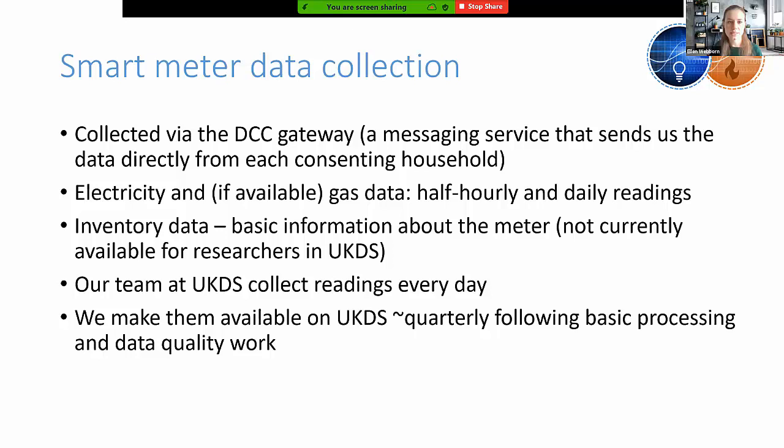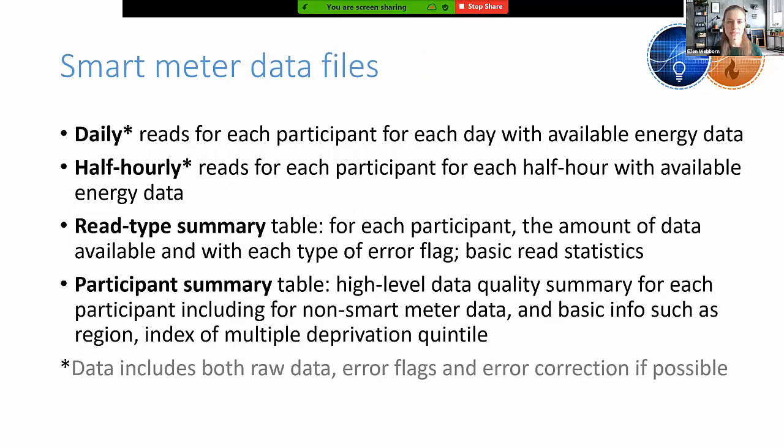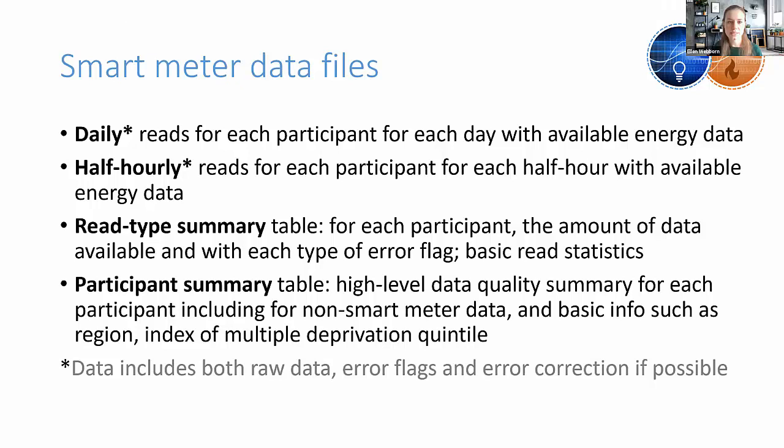Our team at UKDS collects readings every single day and makes them available approximately quarterly. In terms of files: there are daily and half-hourly files with reads for each participant for each day and half-hour. We also create a read type summary table showing, for each reading type per participant, the amount of data available with each error flag and basic statistics like mean and max. We're also creating a participant summary table — a high-level data quality summary for each participant, including non-smart-meter data, basic info, raw data, error flags, and basic error correction where possible.